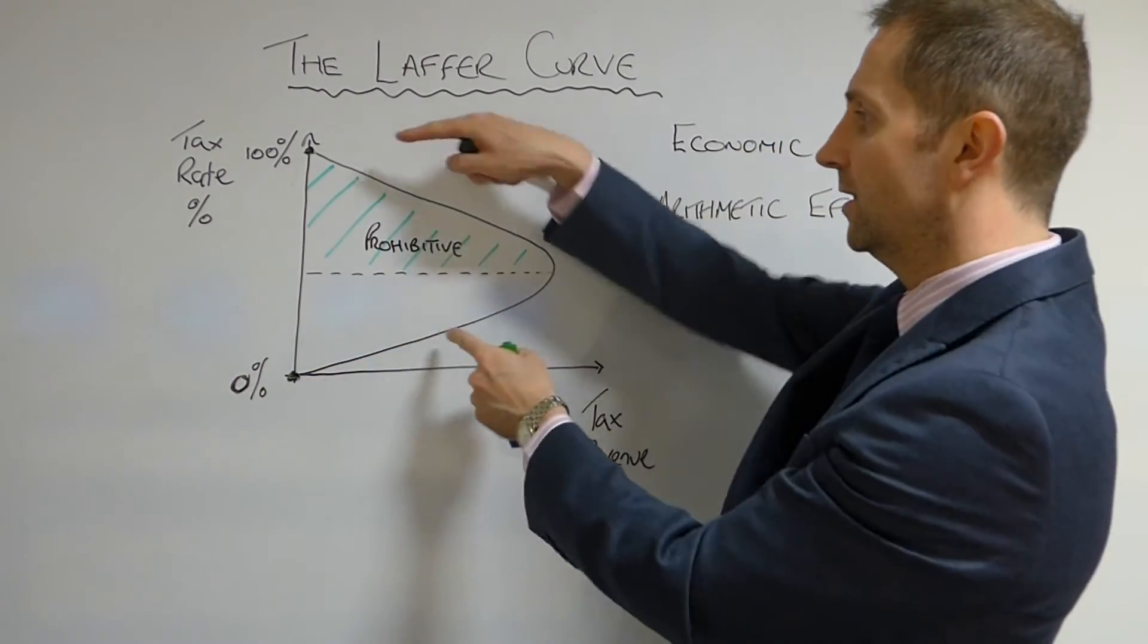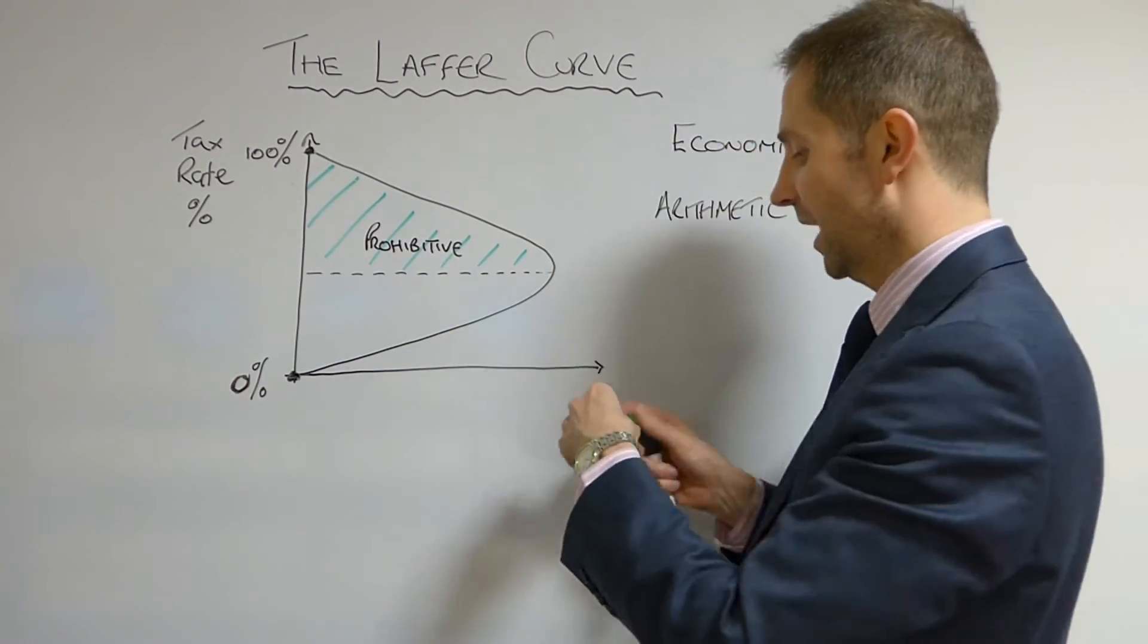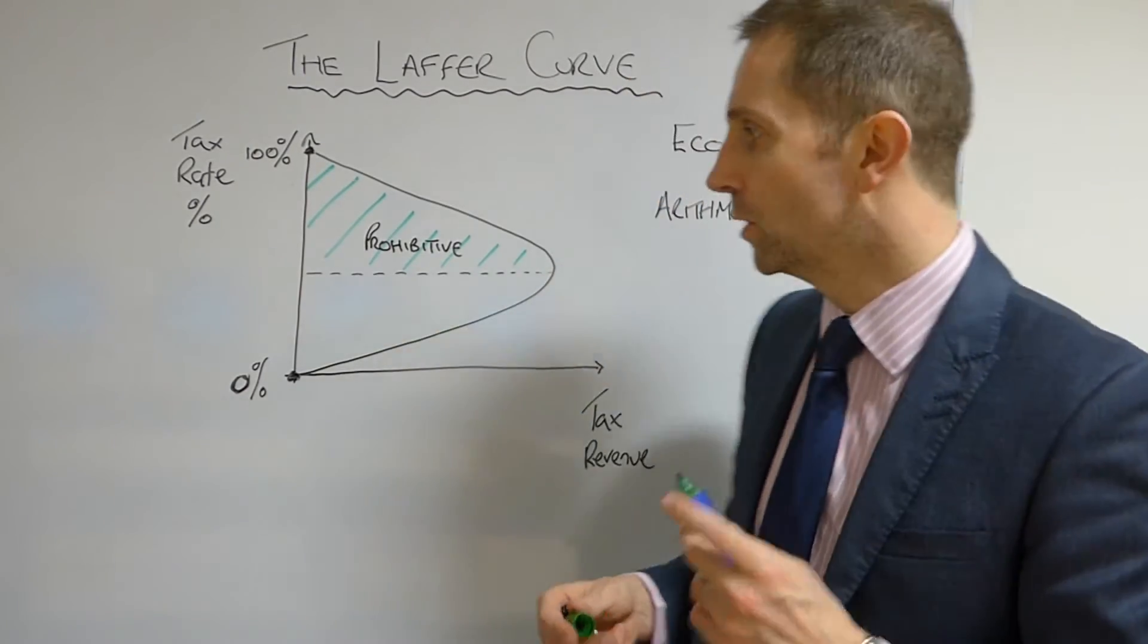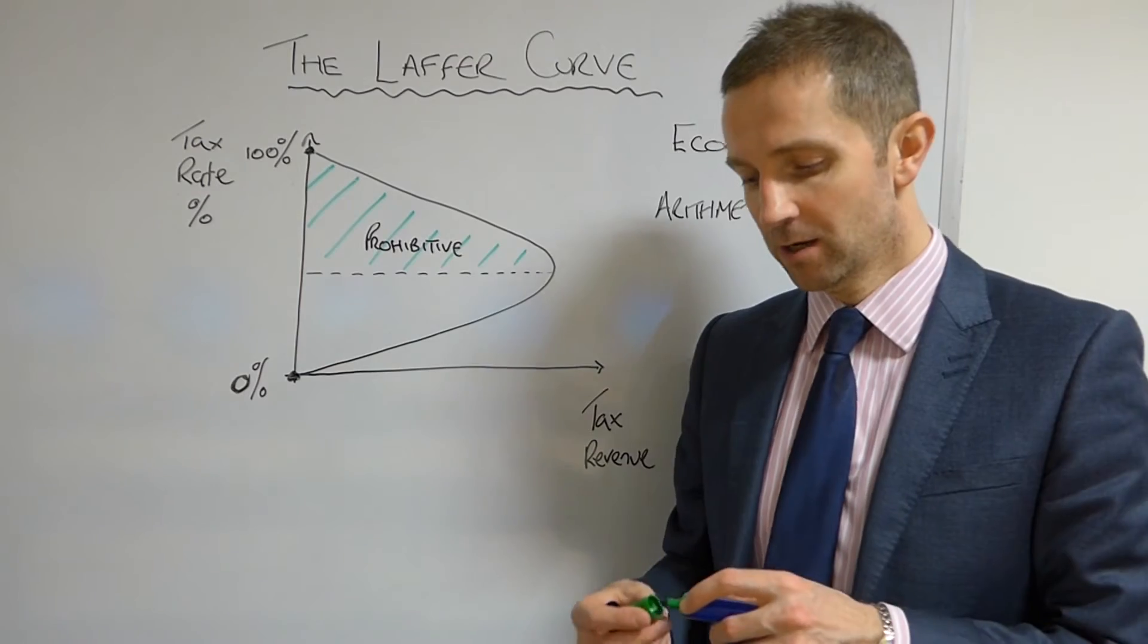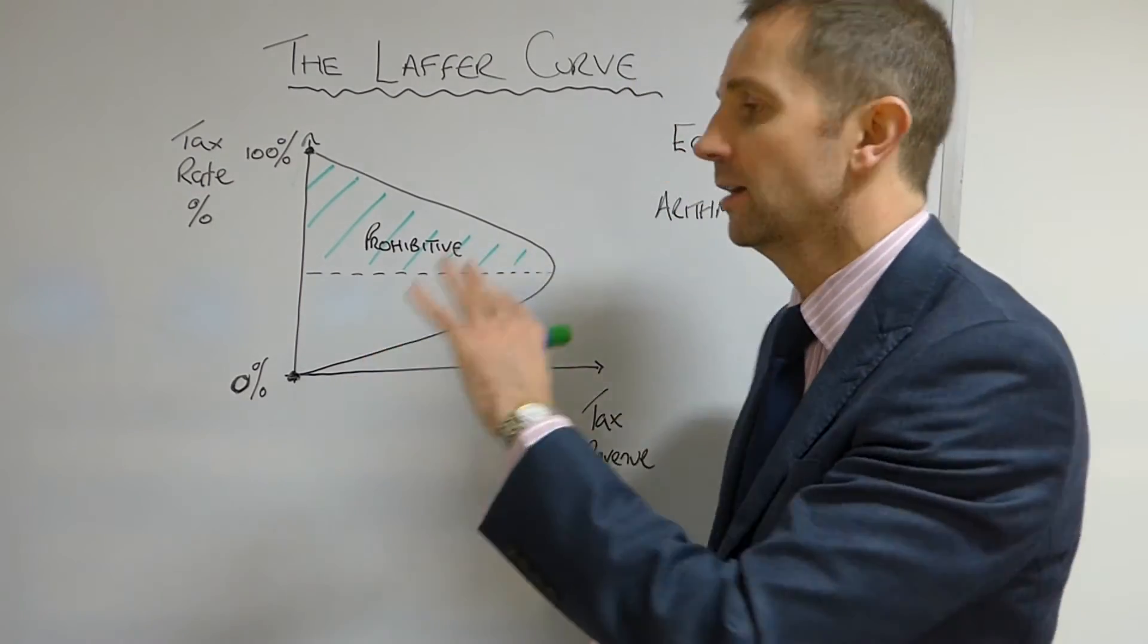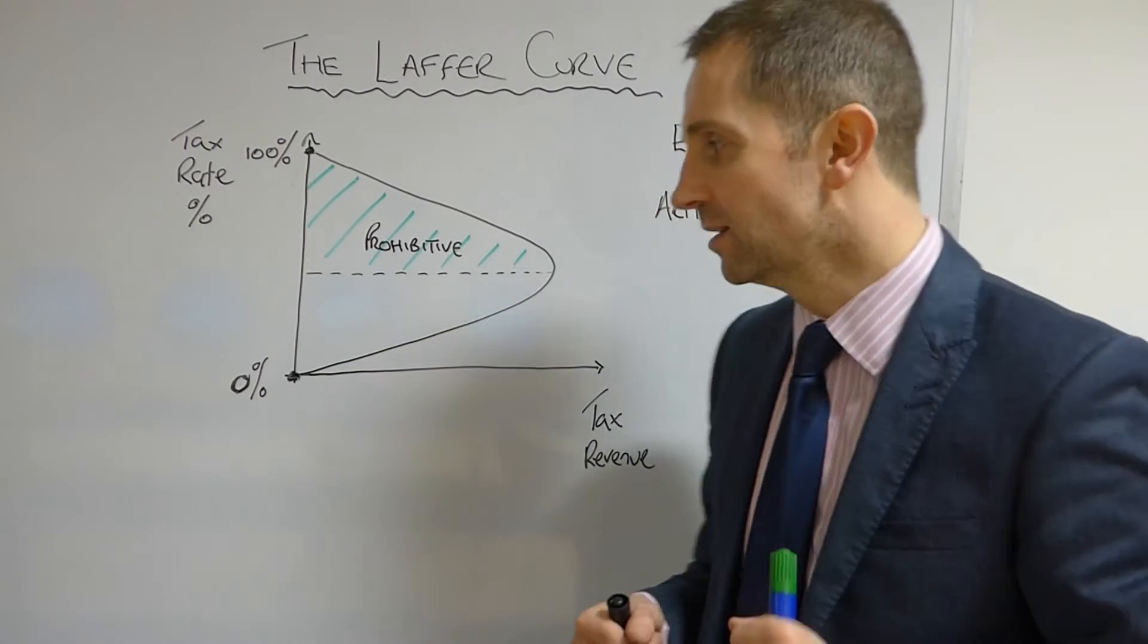Now the whole point of the Laffer curve is to say that at some point these two competing objectives come together at a point where the tax revenue will be maximized. Now this is not for a government to use this model necessarily to say okay, 52.5% is the correct level of taxation in order to maximize your total revenue.